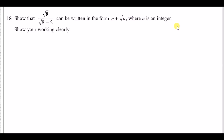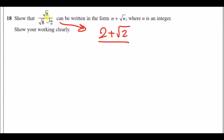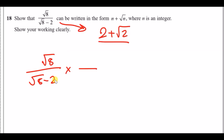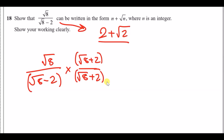For 17c: show that a given fraction can be written in the form n + √2 where n is an integer. You can check by putting it in your calculator — the result is 2 + √2. To show working, the key technique is rationalising the denominator. When you have a surd in the denominator, multiply top and bottom by the conjugate — the opposite sign version of the denominator. So if the denominator is √8 - 2, multiply by √8 + 2.